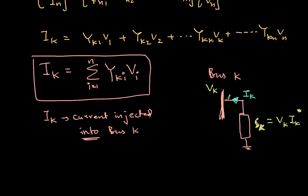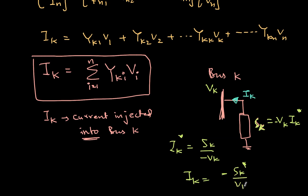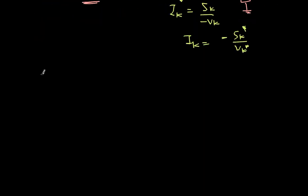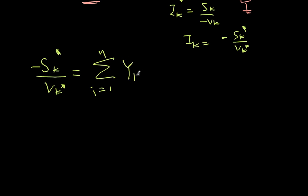More precisely, Sk = Vk·Ik*, but since the current direction is into the bus, we take a minus sign: Sk = -Vk·Ik*. Therefore, Ik* = Sk / (-Vk), or equivalently Ik = -(Sk*) / (Vk*). This gives us the expression for Ik in terms of Sk and Vk.